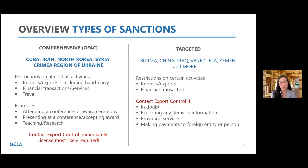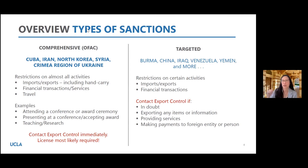There are two types of sanctions. The first is comprehensive sanctions. Currently, the countries subject to comprehensive sanctions by the U.S. government are Cuba, Iran, North Korea, Syria, and the Crimea region of Ukraine. For these countries, there are restrictions on virtually almost all activities — imports, exports, carrying items, financial transactions, services, and in many cases, travel.